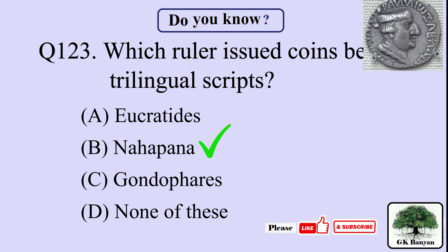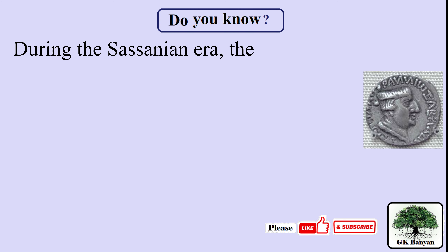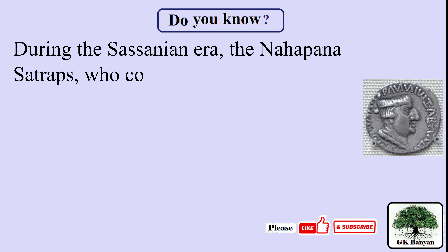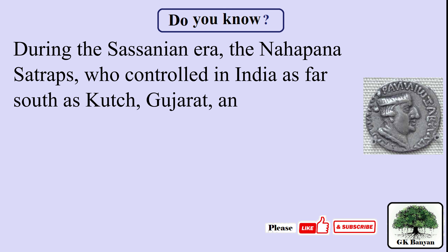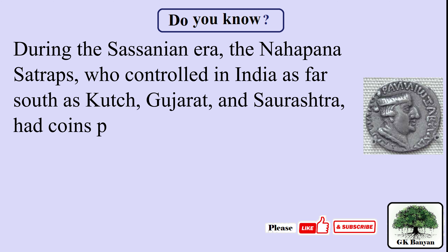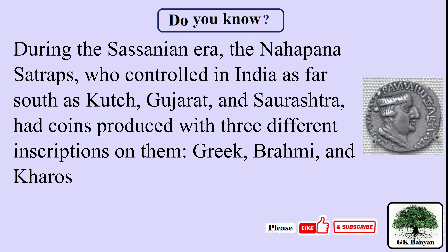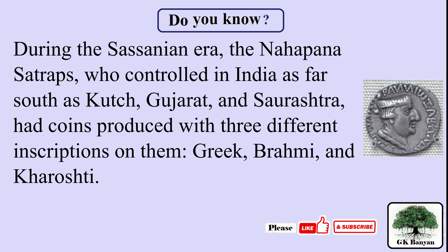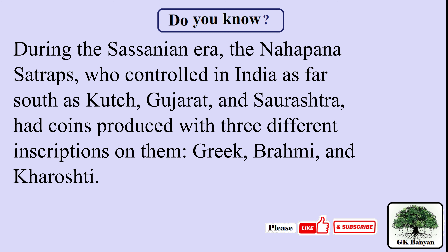The right answer is B. Nahapana. During the Sasanian era, Nahapana satraps who controlled India as far south as Kuch, Gujarat and Saurashtra had coins produced with three different inscriptions on them: Greek, Brahmi and Kharoshti.